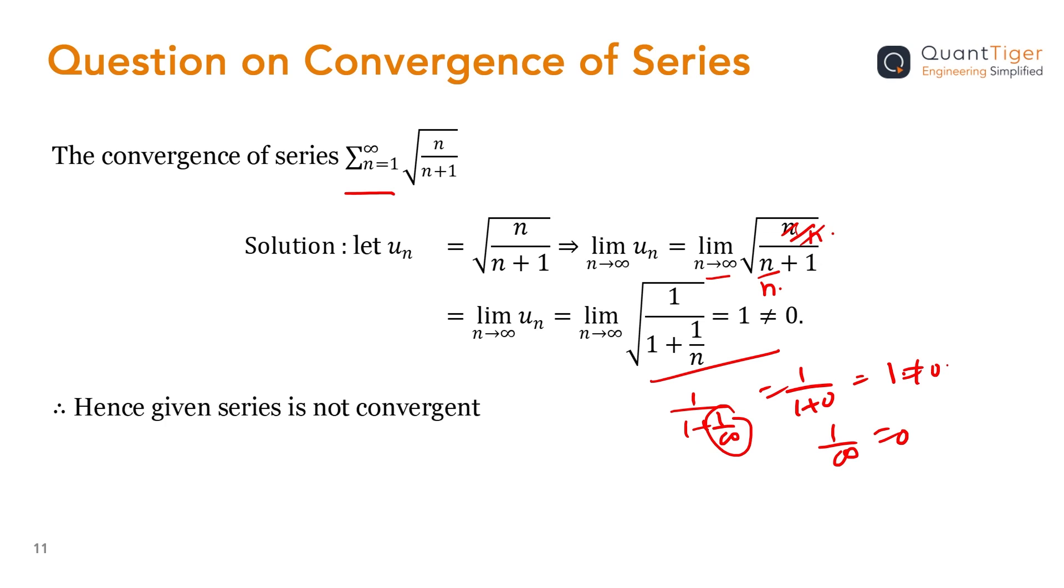After simplification, I got the answer as 1. That is why we can say that this is not a convergent series, because it is giving the answer 1. This is how we can check whether the given series is convergent or not. A very simple technique is there to understand whether it is convergent or not. If you practice this way, it will be easy to solve questions for checking whether it is a convergent series or not. Thank you.